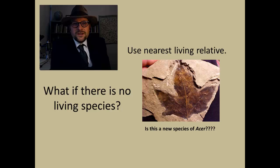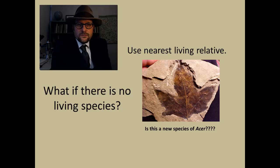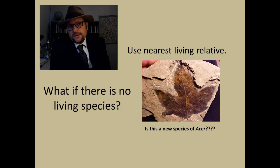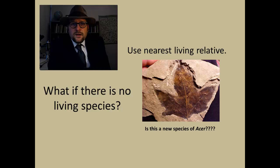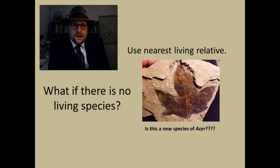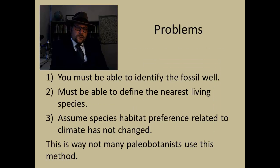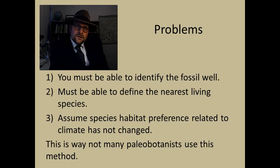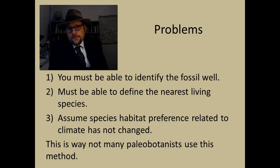Another problem comes up if there is no living species for the fossil. Maybe this species is a new and different species of maple that is not living today, so we would have to try to interpret what that might be — we could only speculate at what the climate might have been like. Here are some of the problems of using this method: first, you must be able to identify the fossil confidently; second, you must be able to define what the nearest living species might be; and third, you must assume that the species' habitat preferences related to climate have not changed over that long period of time.